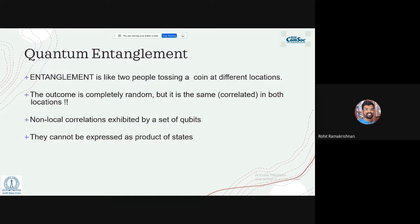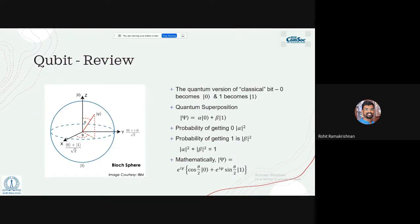The first gate is the Hadamard gate. Imagine a qubit in state |0⟩ — the vector points in the positive z direction. Applying the identity gate does nothing; the qubit stays as it is. Applying the X gate — the NOT gate — reverses the vector to the negative z direction, so |0⟩ becomes |1⟩ and vice versa. These are the identity and NOT gates.